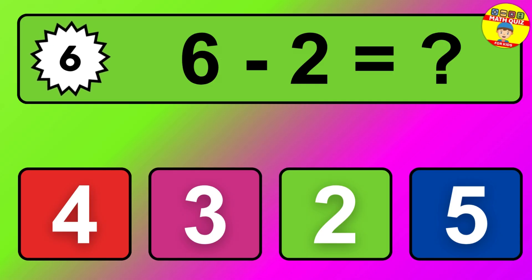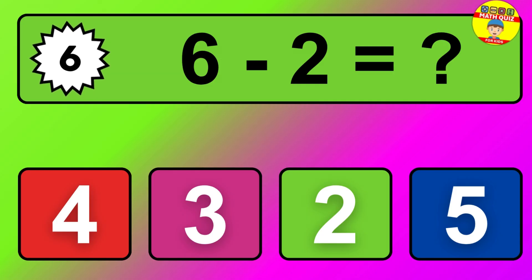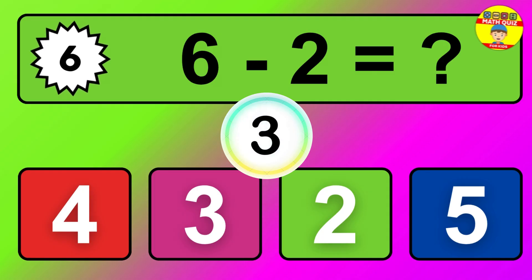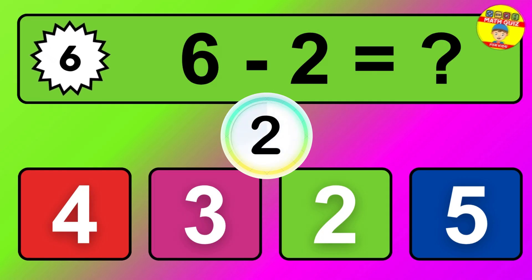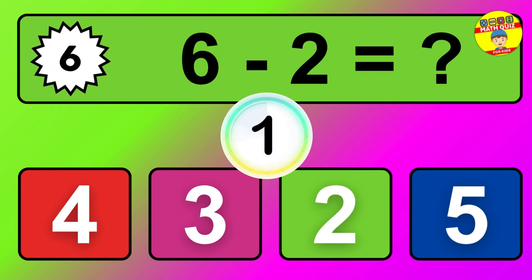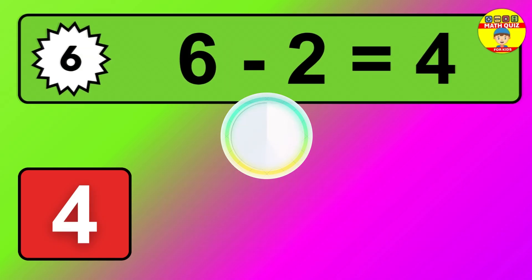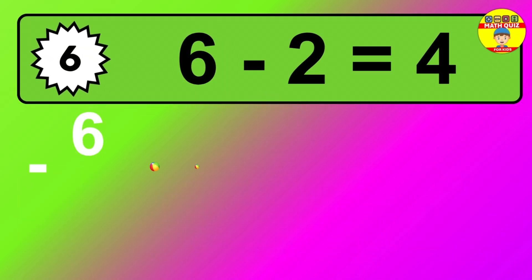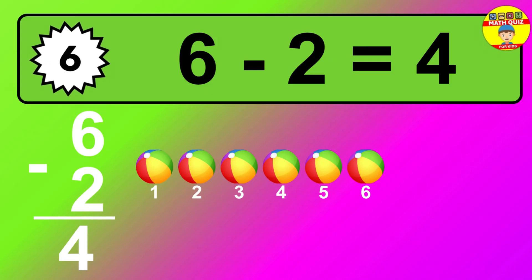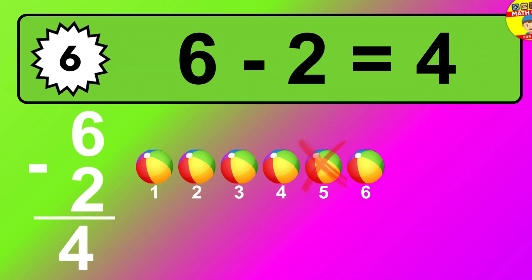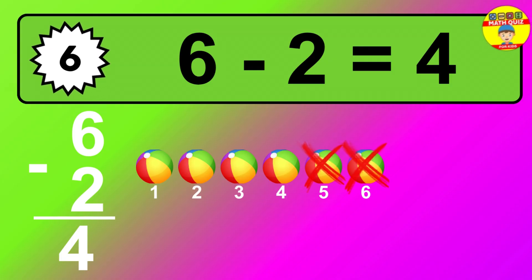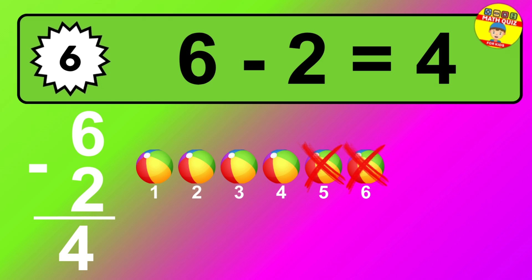Question 6. 6 minus 2 equals what? The answer is 6 minus 2 is 4. Let's count it: 1, 2, 3, 4.